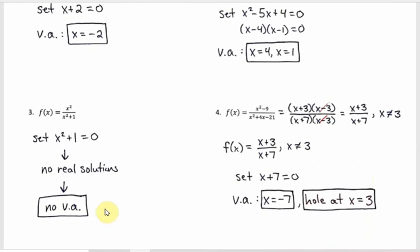You can also have no vertical asymptotes, as in example three. There's no way to make that denominator zero — solving gives x squared equals negative one, which has no real solutions. Since we're working with real numbers only, no real solutions means no vertical asymptotes. Graphs without vertical asymptotes tend to look a little weirder.